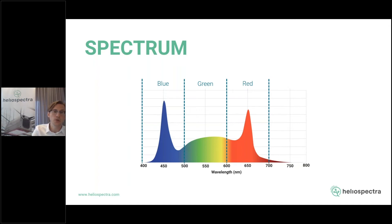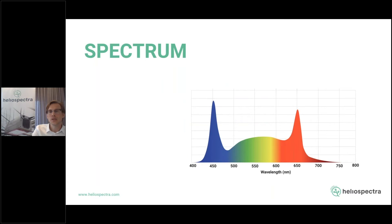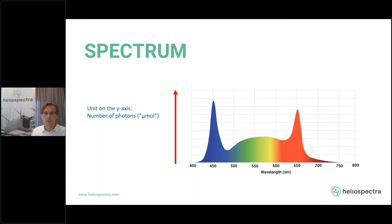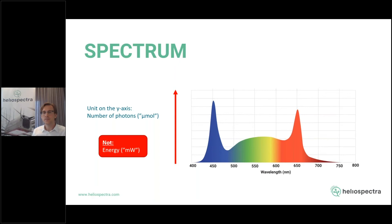One important thing when looking at a spectrum is to make sure the y-axis shows the number of photons — in units such as micromoles, which we'll discuss more later. The spectrum should visualize how many photons there are of each color. This is as opposed to spectra that show energy on the y-axis, which displays how much energy is carried in each part of the spectrum. That graph will be skewed and therefore potentially misleading. Always check whether the spectrum is in units of photons or energy — otherwise you might be confused.